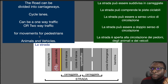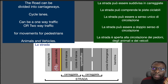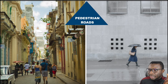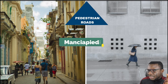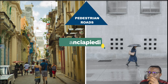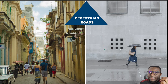There are also roads designated for pedestrians. This is a pedestrian road — you can see people transiting on it. This type of road is normally found close to the main road.